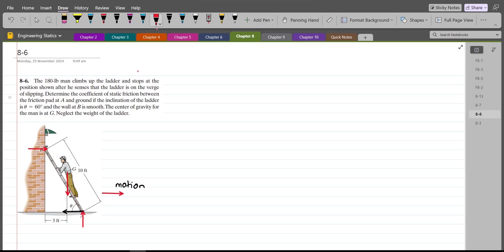Let's label them. So let's call this NB. This right here is NA. This is FA. And this is 180 lb weight of the man.